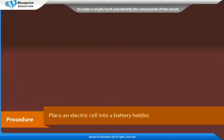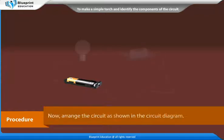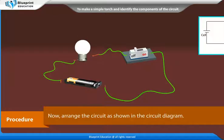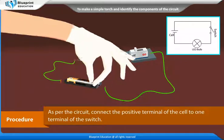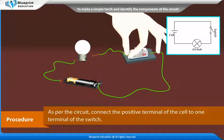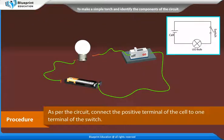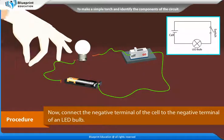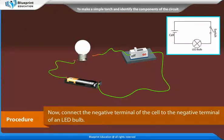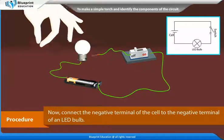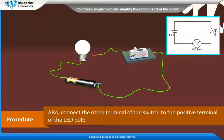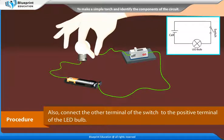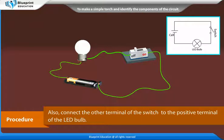Procedure: Place an electric cell into a battery holder. Now arrange the circuit as shown in the circuit diagram. Connect the positive terminal of the cell to one terminal of the switch. Now connect the negative terminal of the cell to the negative terminal of an LED bulb. Also connect the other terminal of the switch to the positive terminal of the LED bulb.